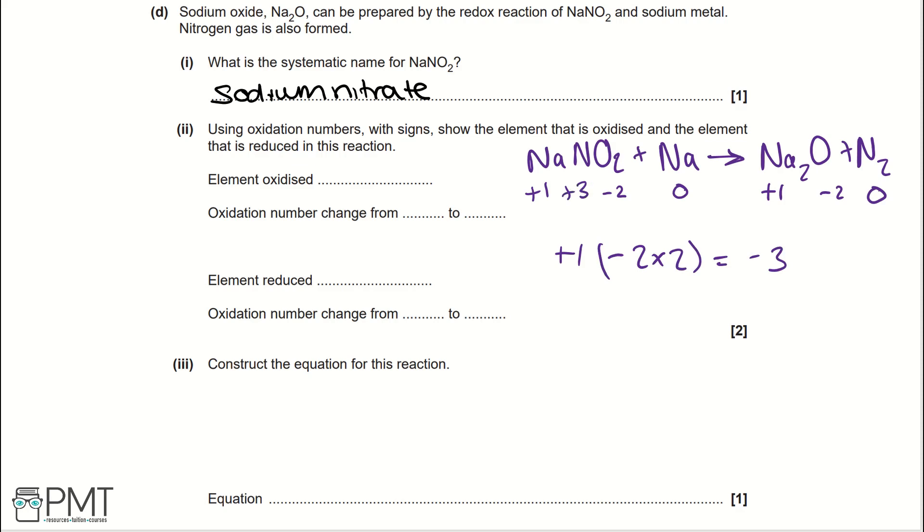Then, if we work out our element that's oxidised, oxidised means that the oxidation number is going to increase. So, the only element here that's oxidation number is increasing is sodium, and it's going from 0 to plus 1. Then, for reduction, or element that's being reduced, we're looking for an oxidation number that's decreasing. And, the only element here is nitrogen, and its oxidation number goes from plus 3 to 0.